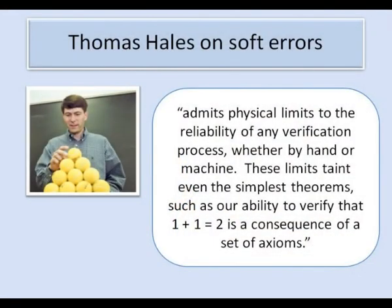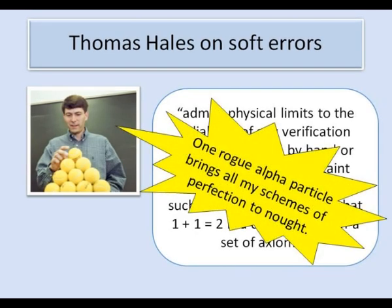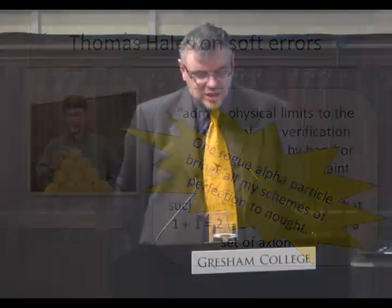So experience has taught us that human mathematicians are fallible and even correctly designed and correctly programmed computers are liable to soft errors. Where does this leave mathematical proof? Thomas Hales in his recent survey article on which I've drawn heavily in this lecture says he admits physical limits to the reliability of any verification process whether by hand or machine. These limits taint even the simplest theorems such as our ability to verify that 1 + 1 = 2 is a consequence of a set of axioms. One rogue alpha particle brings all my schemes of perfection to naught. The fallibility of the human mind and the physics of our universe both affect the viability of absolute mathematical proof.